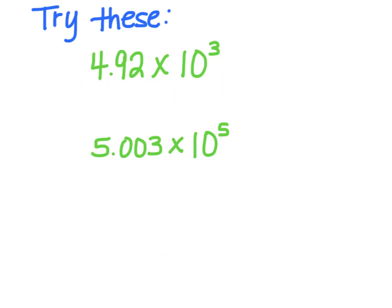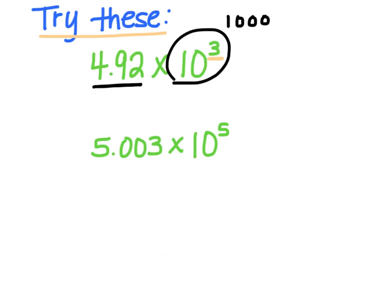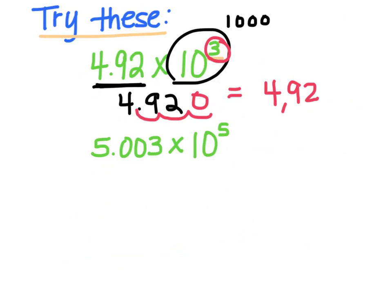Let's see if we can write these in standard form — right now they're written in scientific notation. What you do is always look at the power of 10. There are three zeros here, meaning I'm taking 4.92 times 10 to the 3rd, which is 1,000. So you know your number is going to get bigger. You're going to take the decimal and move it three spots to the right: one, two, three. And I end up with 4,920. You should always check — does that answer make sense? It started out as 4.92, a small number. If you multiply it by 1,000, it should get bigger, and here it did.